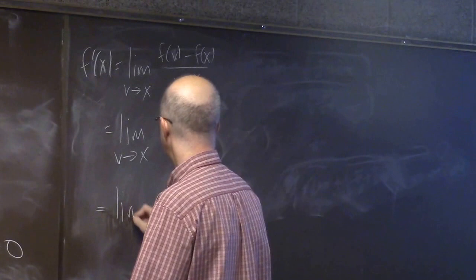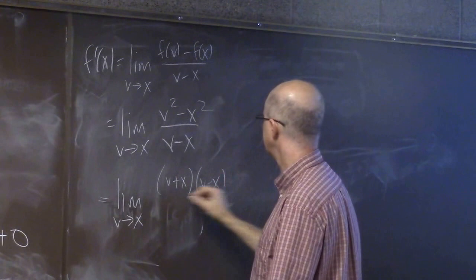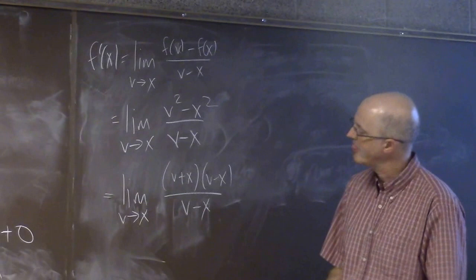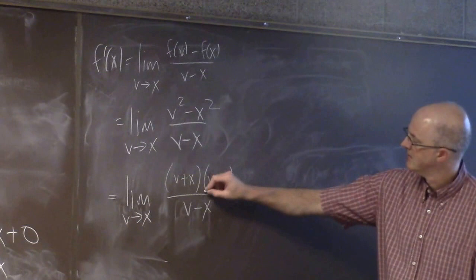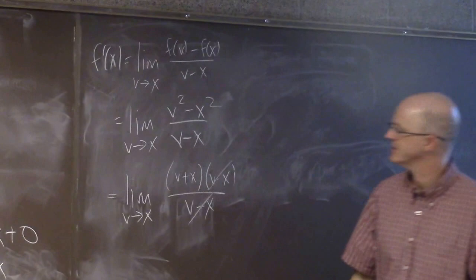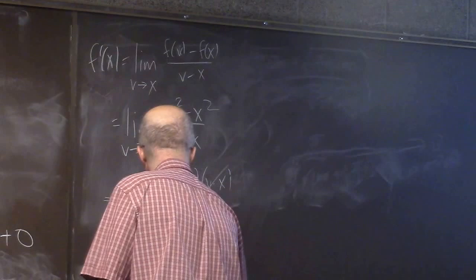Well, the algebra is a little different here. Instead of expanding and canceling, you've got to factor. As a function of v for fixed x, this is continuous everywhere except when v equals x. But, since the value of the limit is independent of what happens when v equals x, I can do that cancellation there. Now plug in v equals x to get 2x.